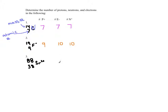If I asked whether this was an atom, a cation, or an anion — for nitrogen, it would be an atom because it has no charge. For F minus, since it's negatively charged, it's going to be an anion.